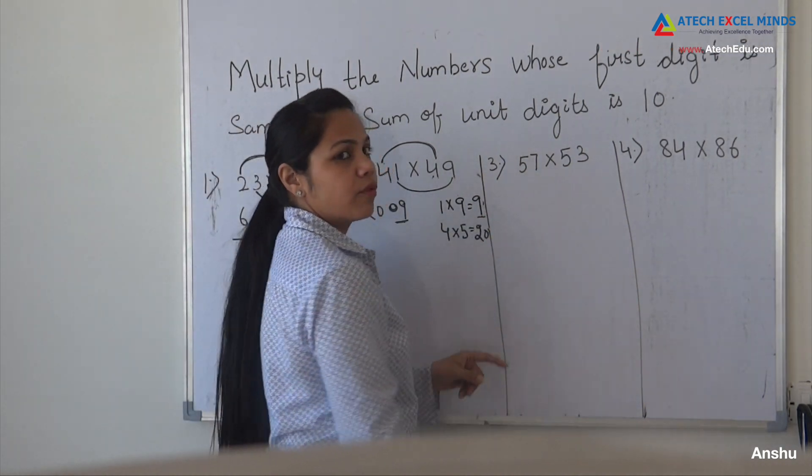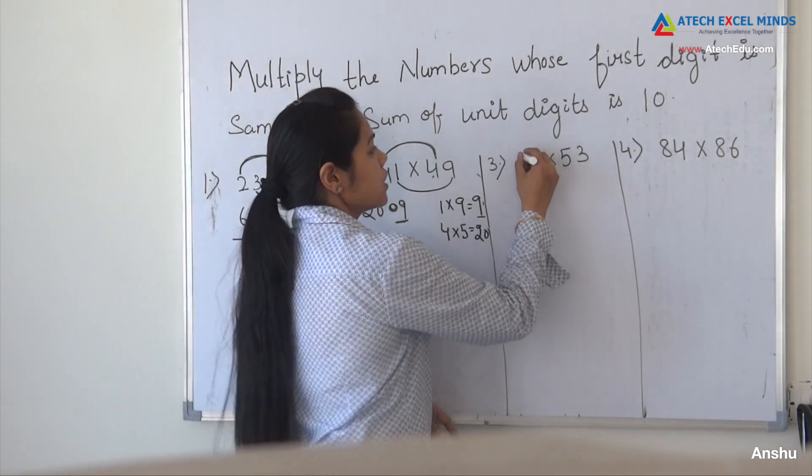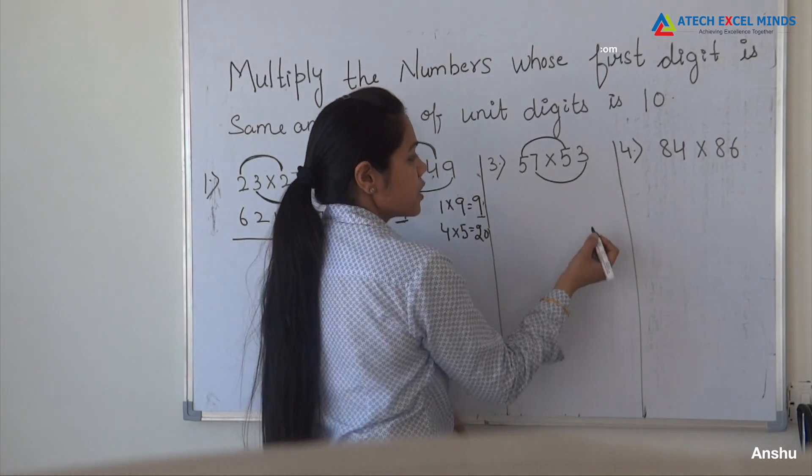Now, here you have to multiply 57 by 53. So what is the first digit? It is same. And the sum of the unit digits is 10.